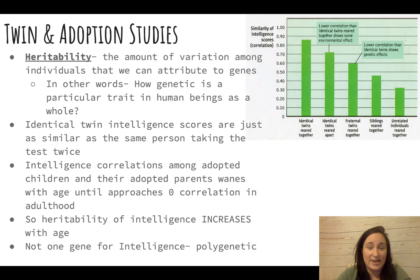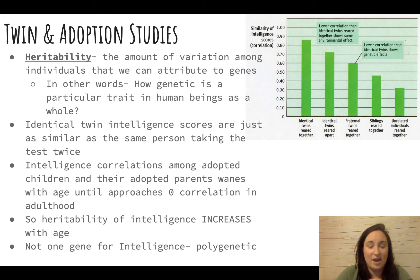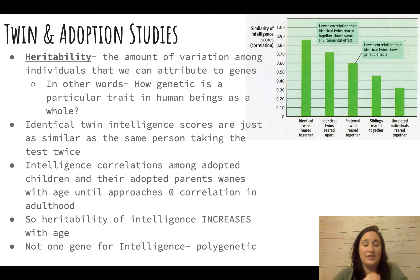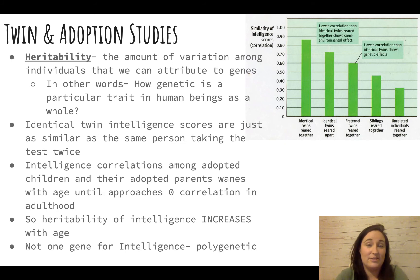We use twin and adoption studies to explore nature versus nurture. The term heritability refers to the amount a trait varies among the human population — how genetic a particular trait is. Identical twins score virtually the same on intelligence tests. With adoptions, there is a correlation with adopted parents' intelligence, but interestingly this correlation actually drops to zero as adoptees become adults.